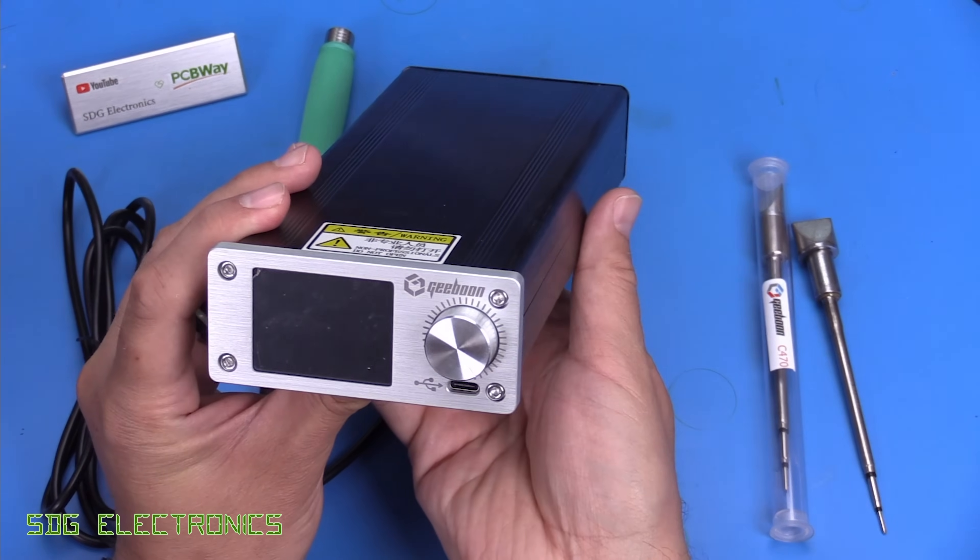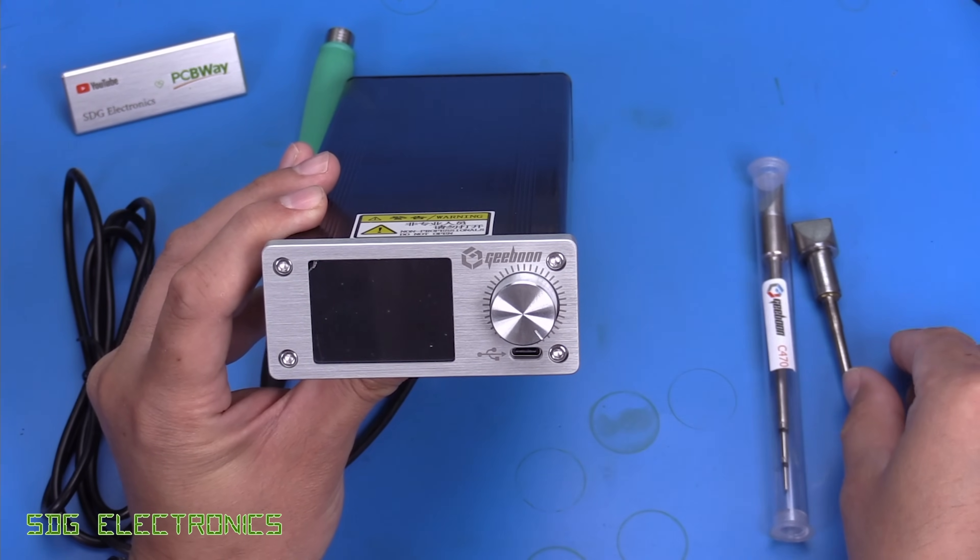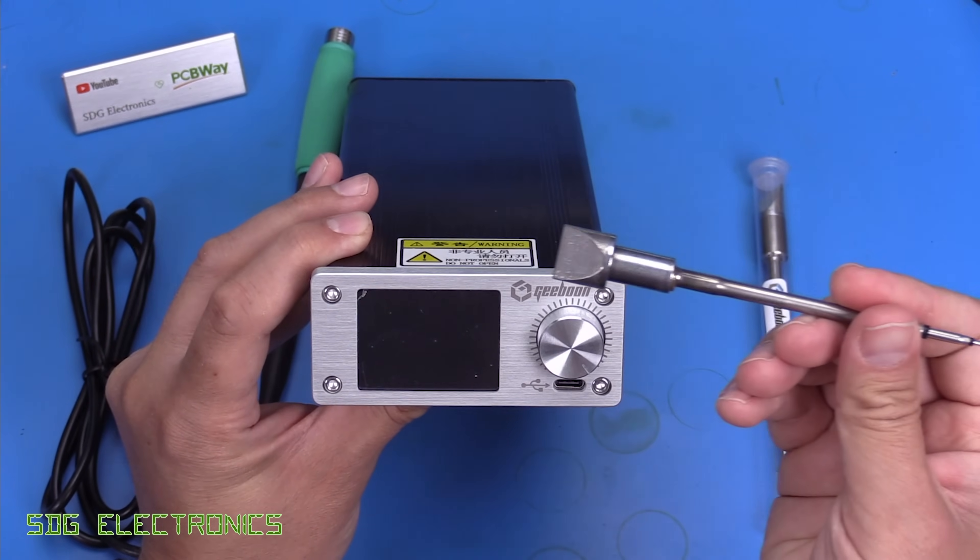It's rated for 380 watts and it's designed to drive all of the JBC handpieces, and in particular the large C470 type cartridges.